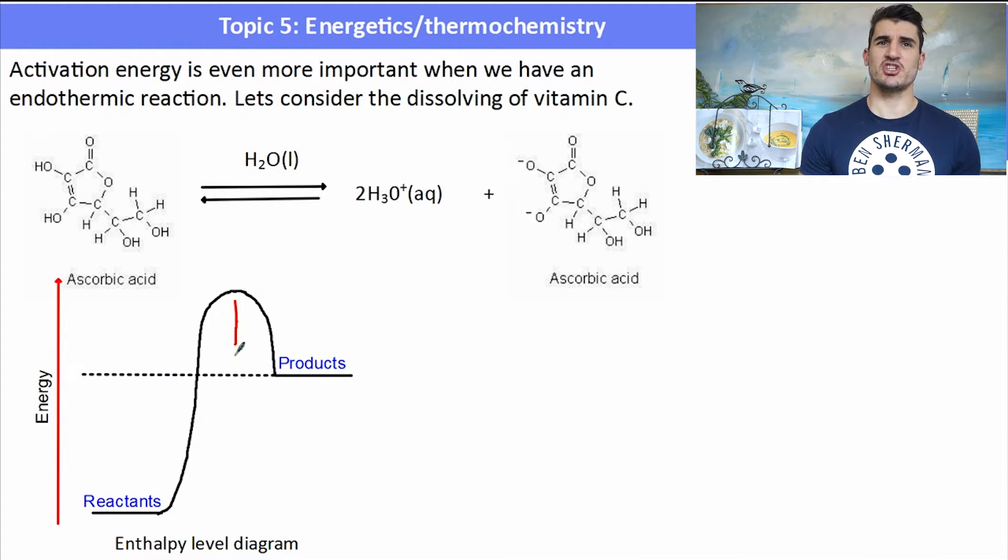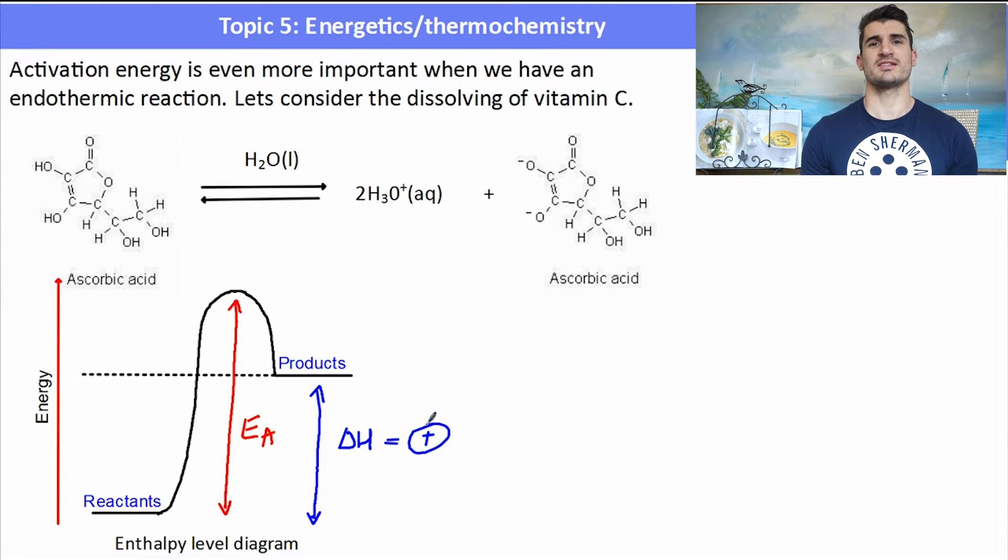Now here the activation energy is very, very large. It's the distance from the reactants all the way to the tip of that curve. Because it's endothermic, we're breaking stronger bonds. There's stronger bonds in the reactants, so we have to add in a lot more energy to break those bonds. The delta H is still just the difference between the reactants and the products, and in an endothermic case that will be a positive value. The products have more energy than the reactants.